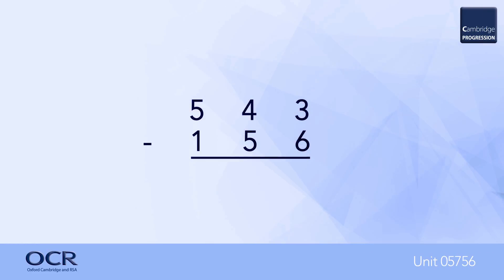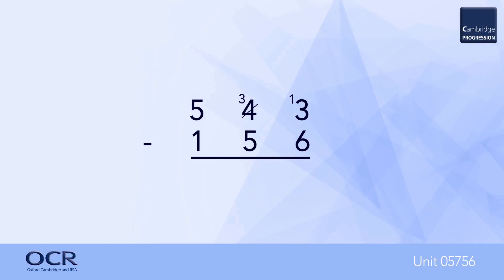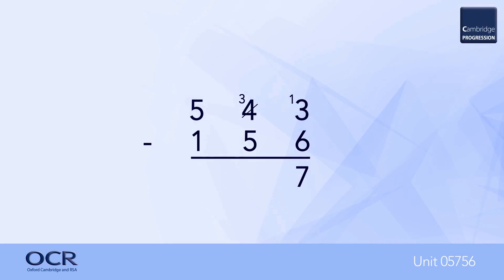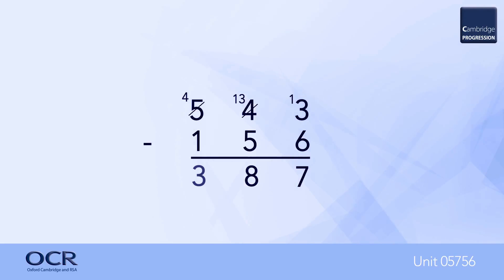One common method known as decomposition works as follows. Three subtract six can't be done, so make the three into thirteen by borrowing a ten from the next column. The four then becomes a three. Now six from thirteen is seven. Next, five from three can't be done, so borrow a ten from the next column — the five then becomes a four. Five from thirteen is eight. Finally, in the column of hundreds, four subtract one is three. This gives the correct answer of three hundred and eighty-seven.